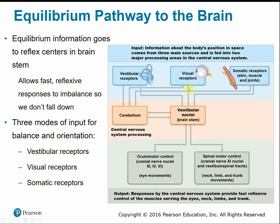Incoming vestibular stimuli are processed through the cerebellum and brain stem. The output response by the central nervous system gives fast reflex-type motions of the muscles in the eyes, neck, limbs, and trunk.